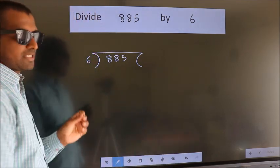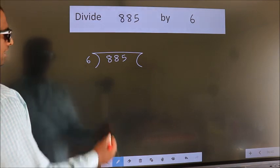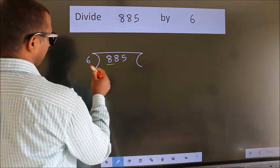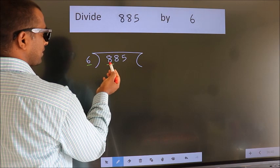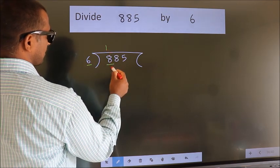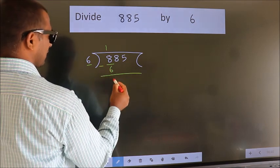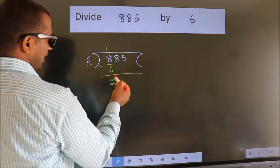This is your step 1. Next, here we have 8, here 6. A number close to 8 in 6 table is 6×1=6. Now, we should subtract. We get 2. After this,